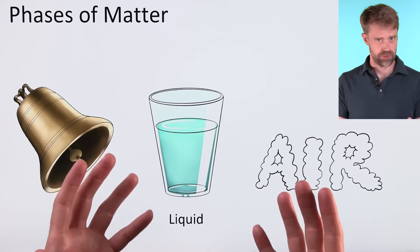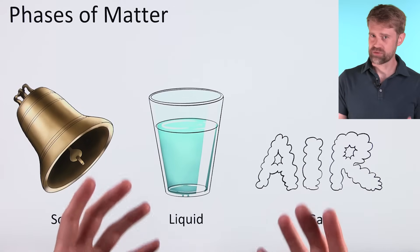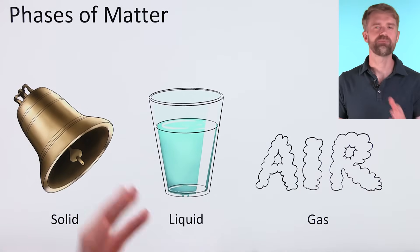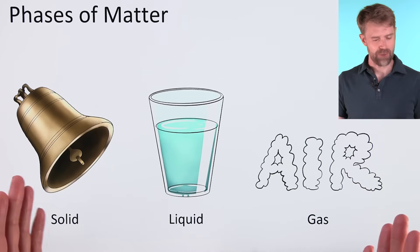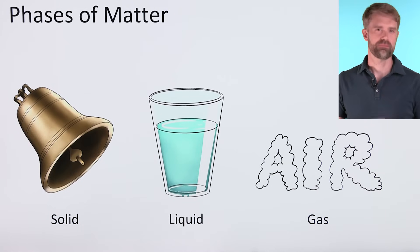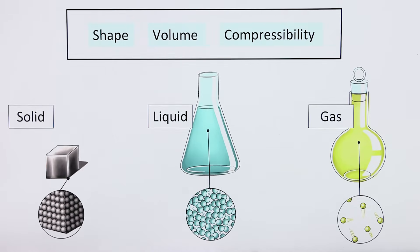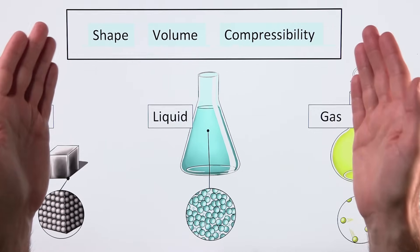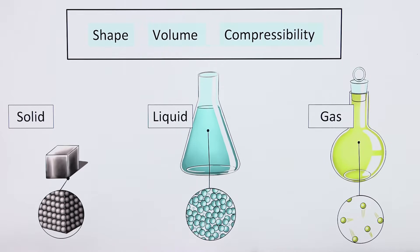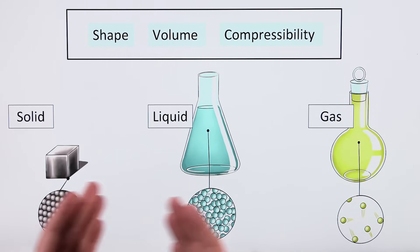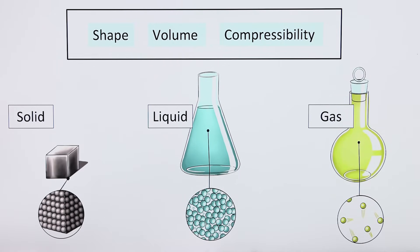You might also know that there's some unusual phases of matter, like plasma, but we're not going to worry about those here. I bet you're pretty familiar with each of these phases from everyday life. But we're going to look at them in a little bit more of a scientific or technical way. We'll first look at some of the big picture characteristics of the different phases, and then we'll look at a microscopic view of each phase.